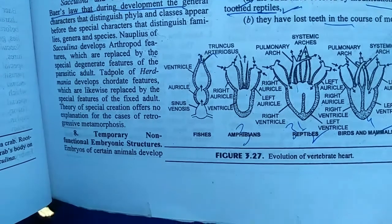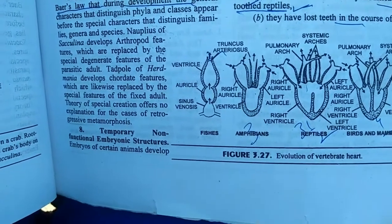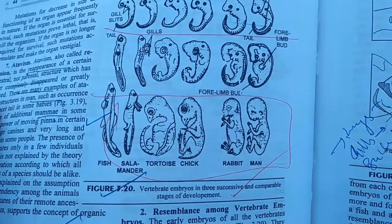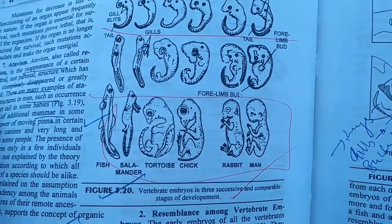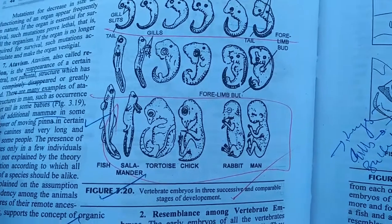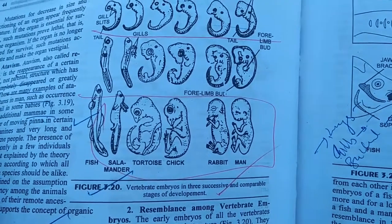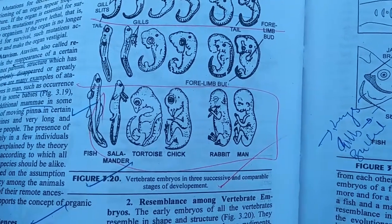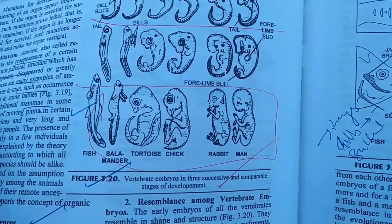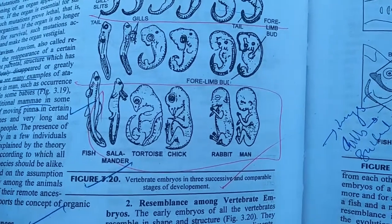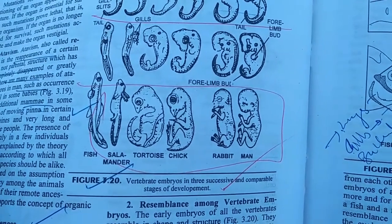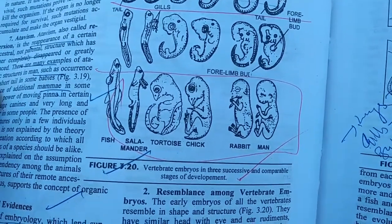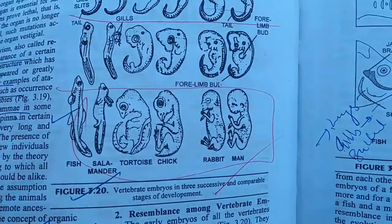This is a very helpful example for interpreting organic evolution. I hope this lecture will be helpful for you in understanding the embryonic indices of evolution, and you will surely like this video. If you have any query or doubt related to my topic, you can comment. You can suggest to me what I should improve and what type of video you want from me. Thank you very much and have a wonderful day.